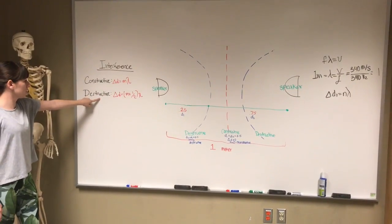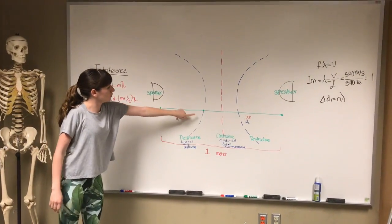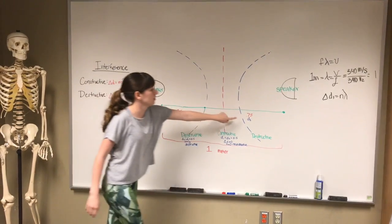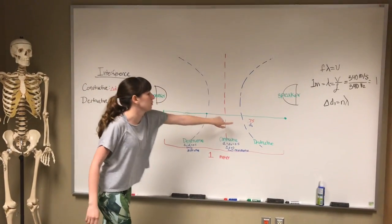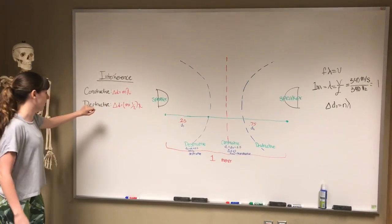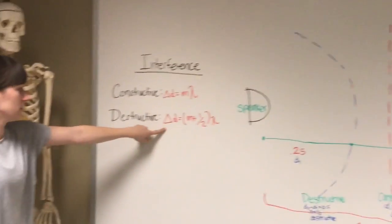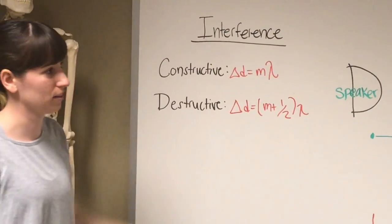And then we have destructive interference, which is the blue line right here, which is right here, and right here, it's 0.25 and 0.75. And the pattern equation we're going to use is this one right here for path length difference.